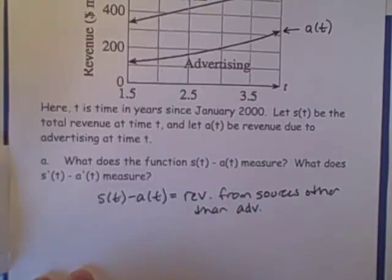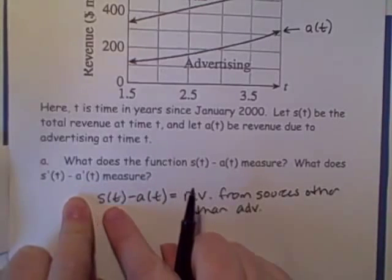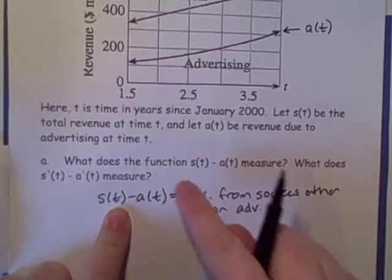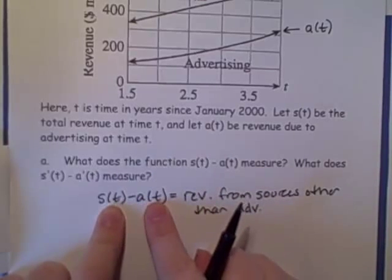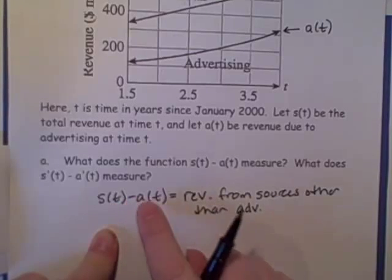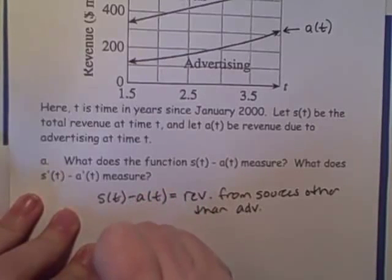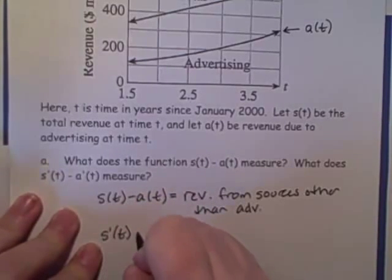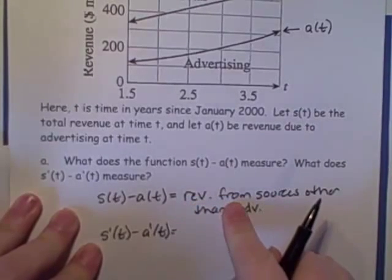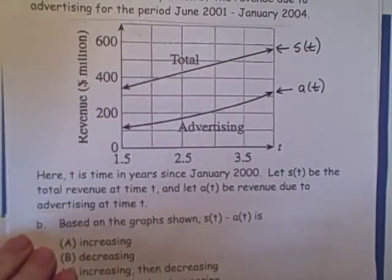Next, we're supposed to say what s'(t) minus a'(t) measures. Well, that's just the derivative of s(t) minus a(t). Remember, if we take the derivative of two functions that are added or subtracted, we just take the derivative of the first minus the derivative of the second. So s'(t) minus a'(t) is going to be the rate of change of revenue from sources other than advertising.